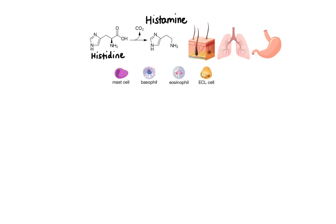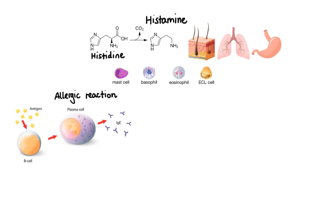There are three major conditions that trigger the release of histamine. First, allergic reaction. When an allergy-prone individual for the first time comes into contact with an allergen such as ragweed pollen, their B cells will become activated and will form plasma cells that produce large amounts of ragweed immunoglobulin E antibodies. These antibodies, abbreviated as IgE, firmly attach themselves to mast cells. Now when that same person comes into contact with ragweed pollen again, the binding of allergen to IgE antibodies will trigger activation of the mast cell, which will then release granules rich in histamine.